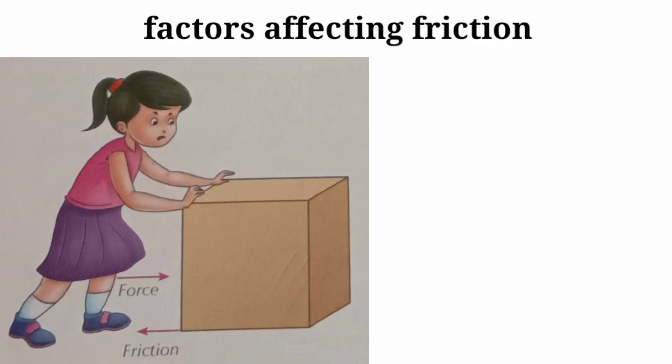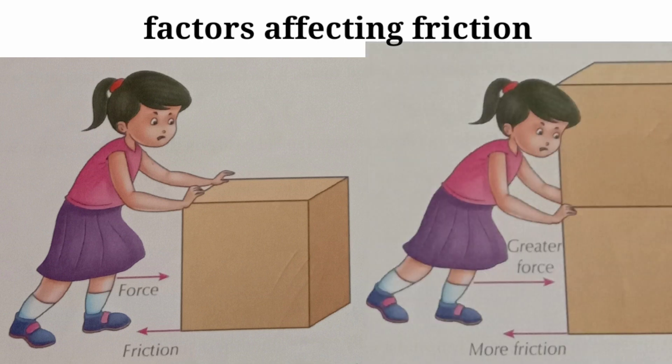If we push a box to move it, we have to exert some force. Now if we place one more box on it and push them together to move, we have to exert a force greater than before. It means that the force of friction depends on the mass of the moving body.